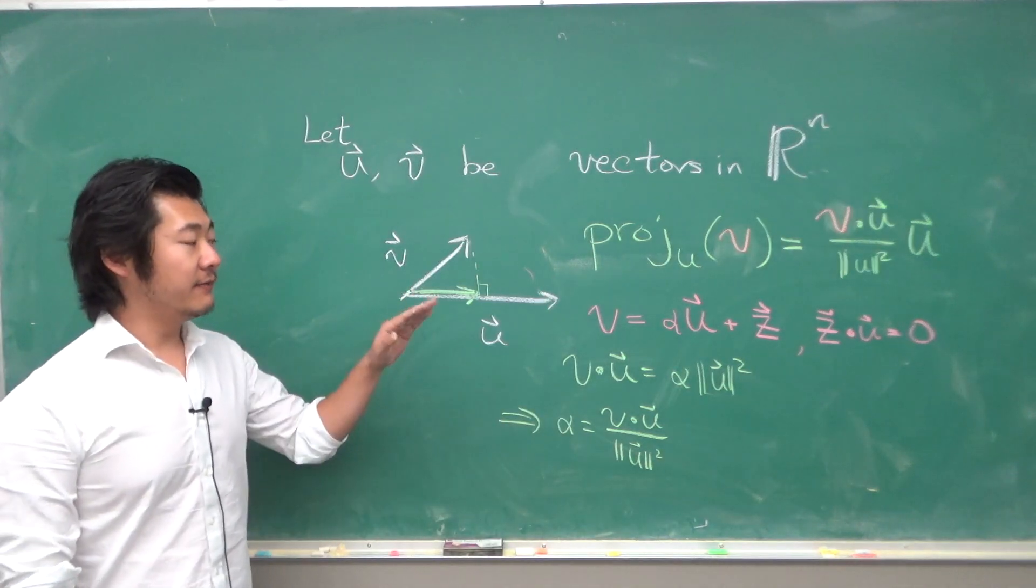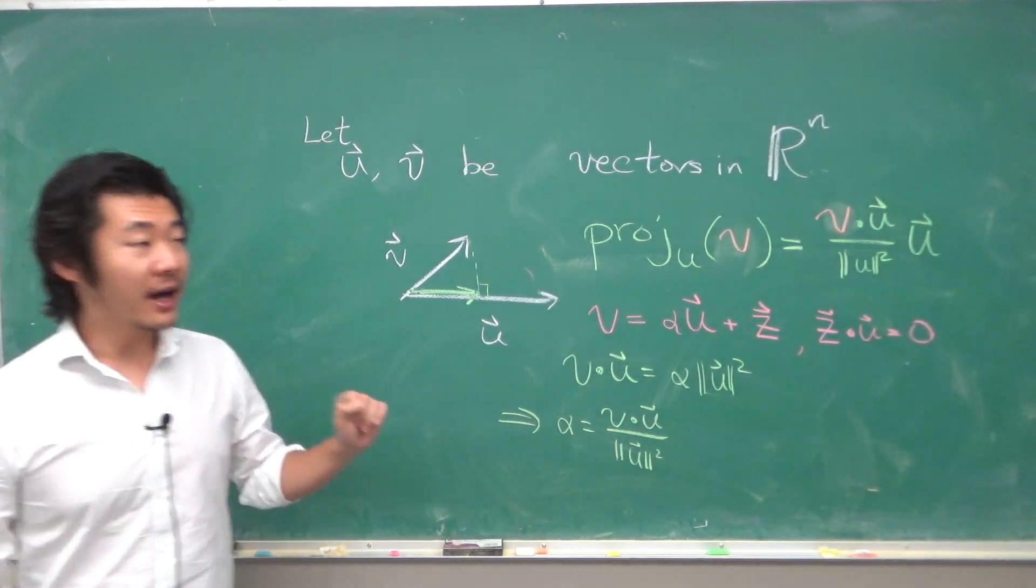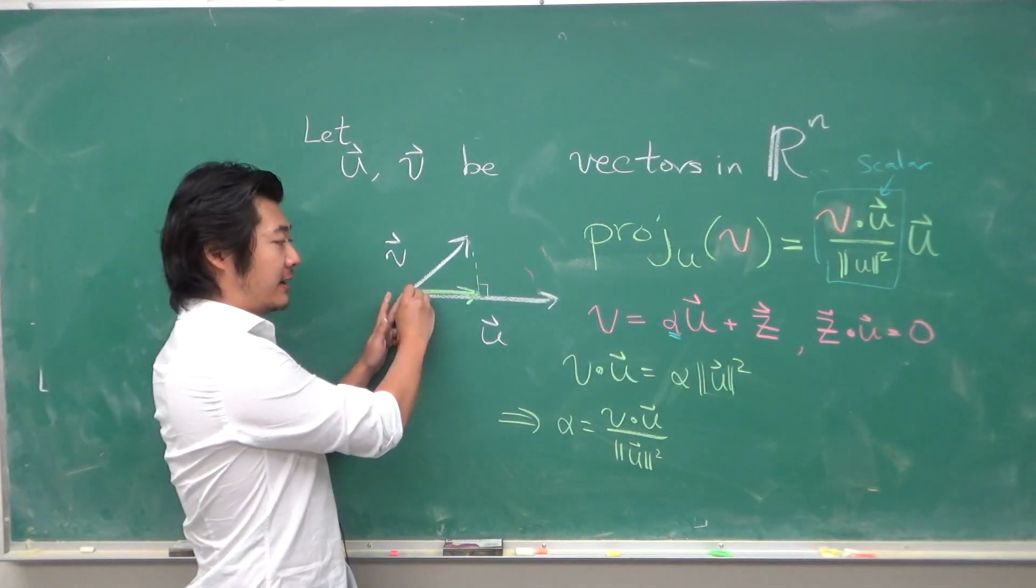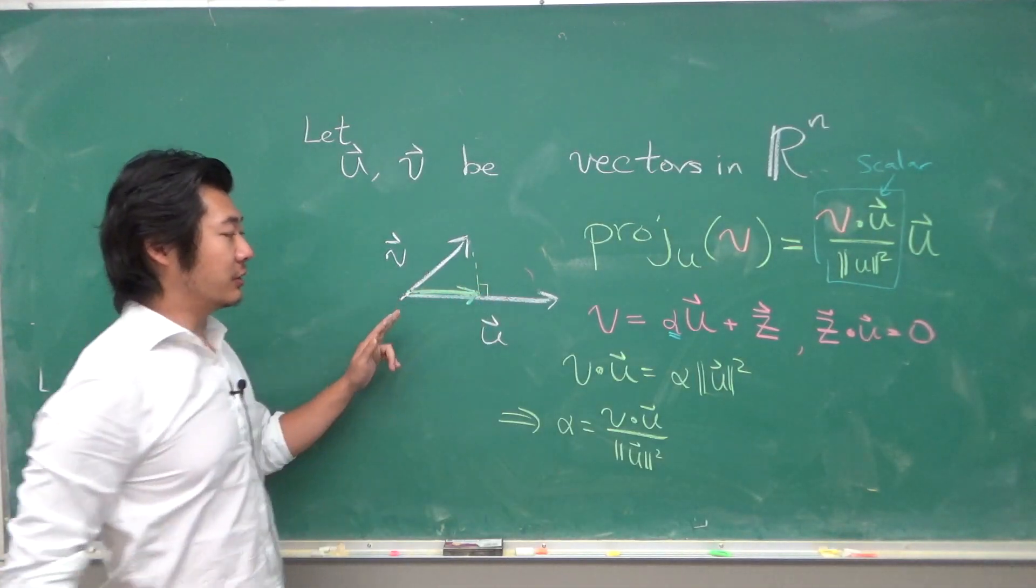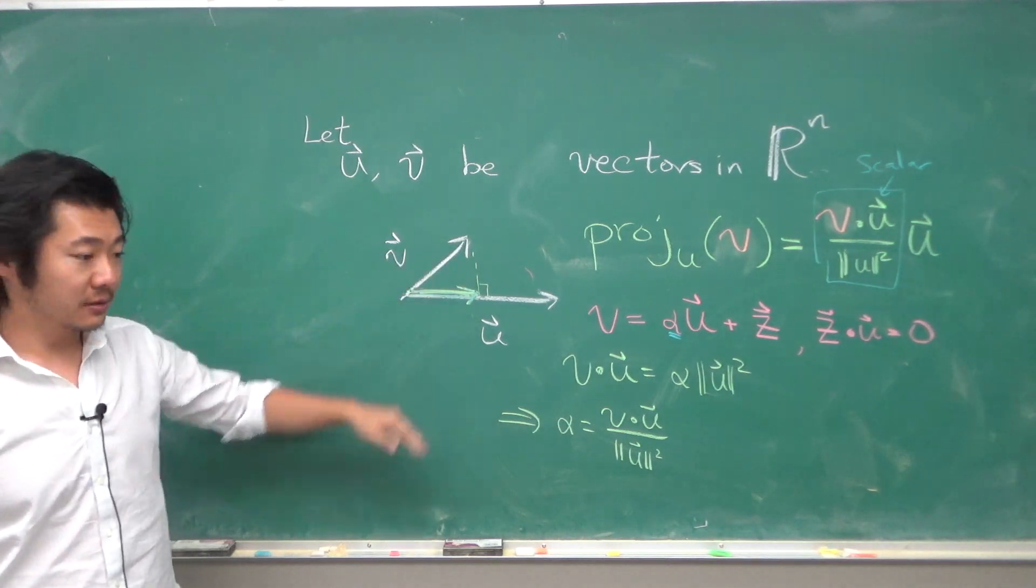This part is just a scalar, and you want to find how much you need to go in the u direction to end up here, which should be the orthogonal projection of v onto u.